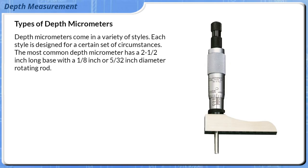Depth micrometers come in a variety of styles. Each style is designed for a certain set of circumstances. The most common depth micrometer has a 2.5 inch long base, with a 1.8 inch or 5/32 inch diameter rotating rod.